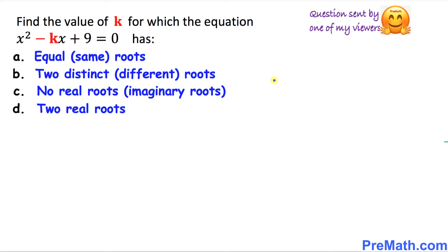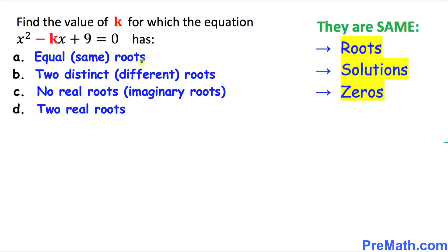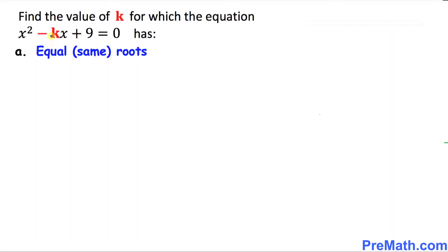Welcome to pre-math. In this video tutorial we are going to find the value of k for a given quadratic equation under four different conditions: equal roots, two different roots, no real roots, or two real roots. Keep in mind that roots are the same as solutions, zeros, or x values.